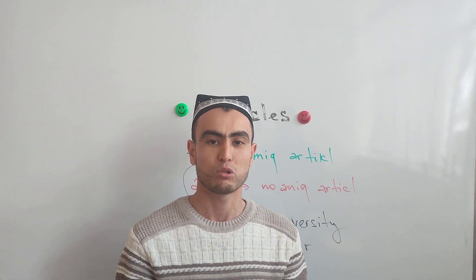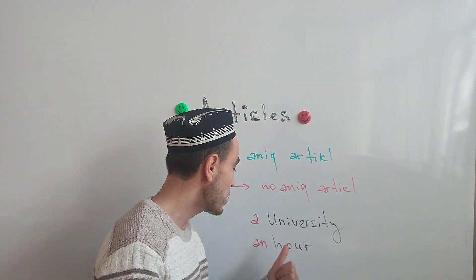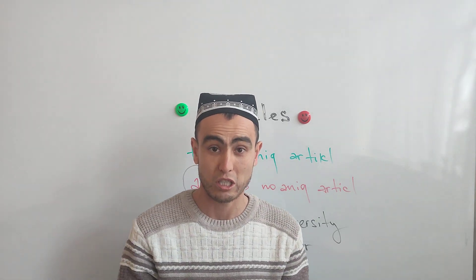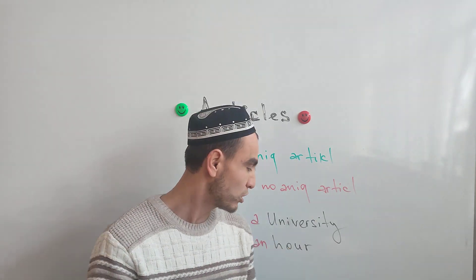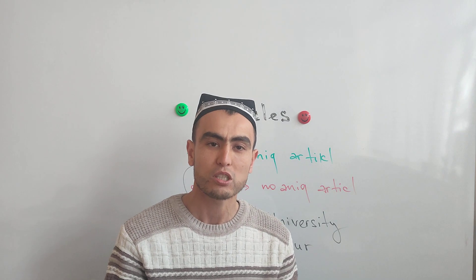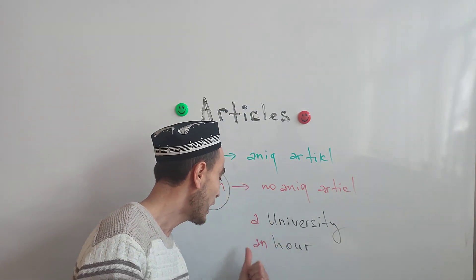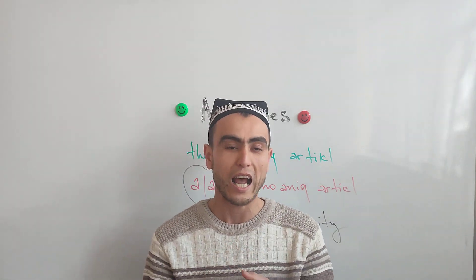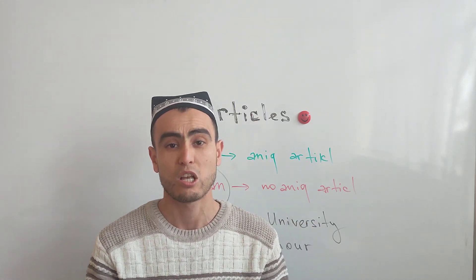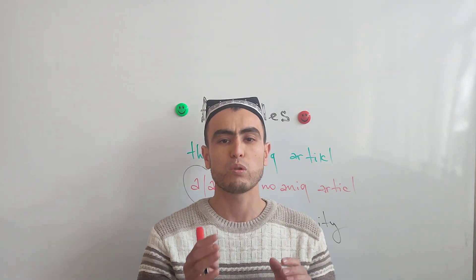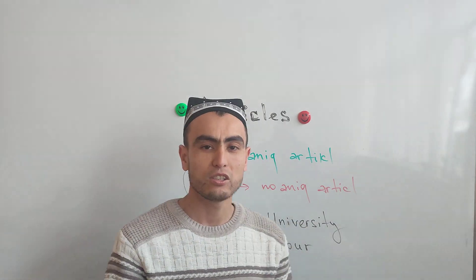University is one example. We need to learn the rule: use 'an' before words that begin with a vowel sound, and 'a' before words that begin with a consonant sound. This also applies to words beginning with 'h' and other letters depending on their pronunciation.